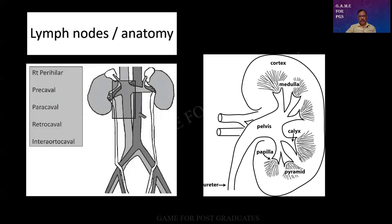Also, the lymph nodes. Generally, we will be getting a specimen and in any of the tumors, they will be asking you what are the routes of spread. What are the lymph nodes to be studied? So in this case, it can be perihilar, precaval, paracaval, retrocaval, and interaortocaval. So there are so many groups of lymph nodes. Just memorize them.